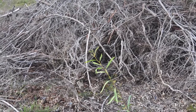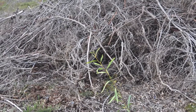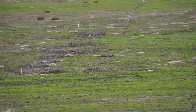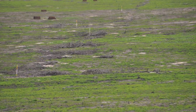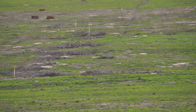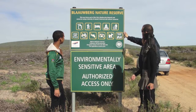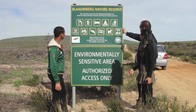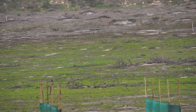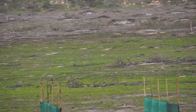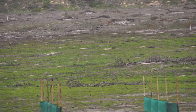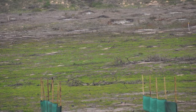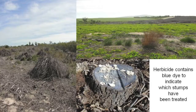Alien invasive species are being cut down and stacked in piles, then burned. The remaining tree stumps are then sprayed with herbicides to prevent regrowth. These herbicides contain a blue dye which acts as a marker. This is being done to provide more space for indigenous species to be planted.